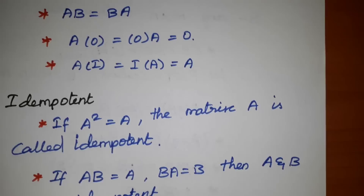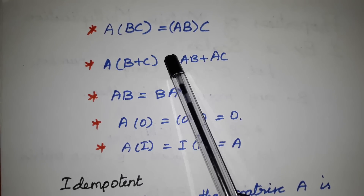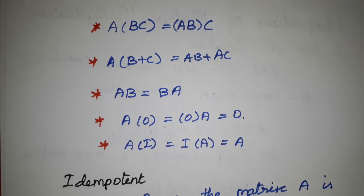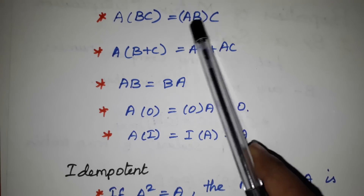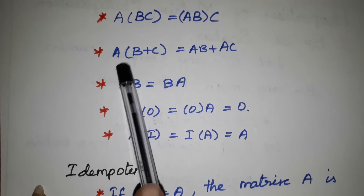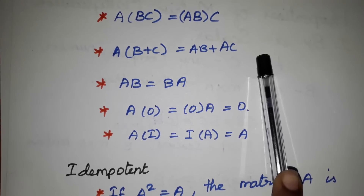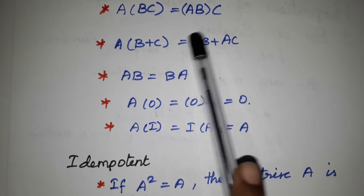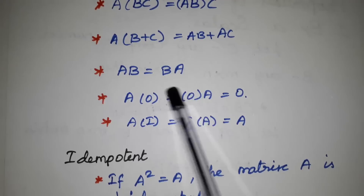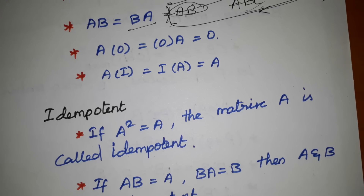The properties of matrix multiplication: A times B times C equals A times (B times C) — associative property. Also, A times (B plus C) equals A times B plus A times C — distributive property. If we multiply the matrix by a null matrix, the result is the null matrix. That means anything multiplied by zero gives zero — the null matrix.